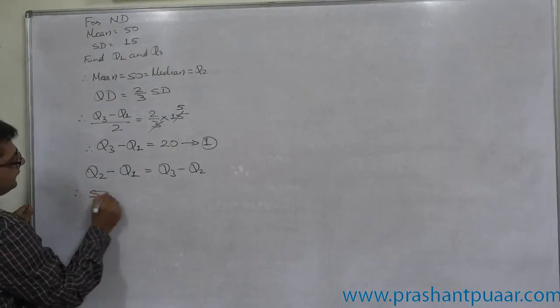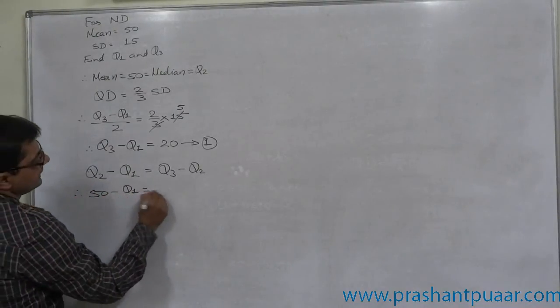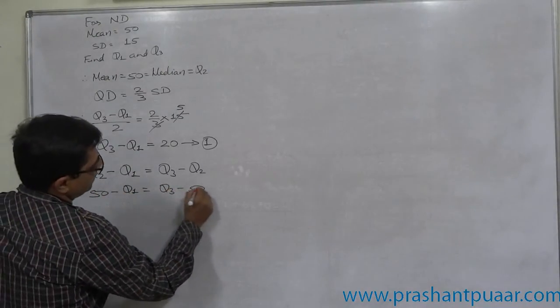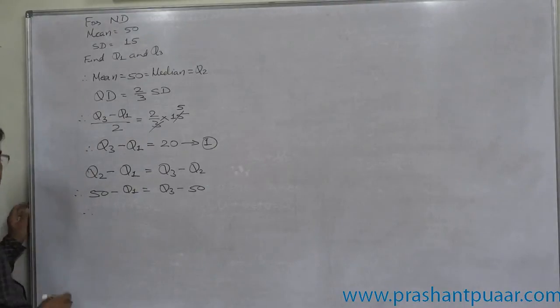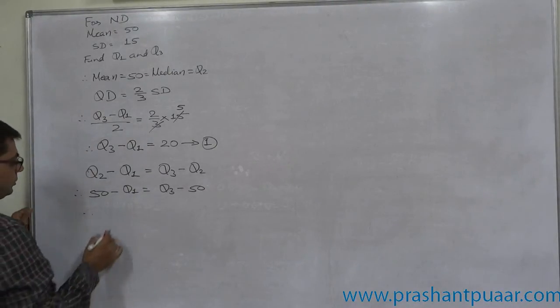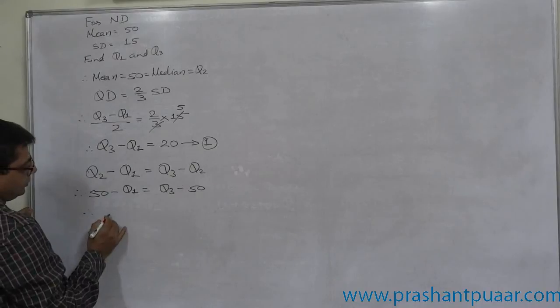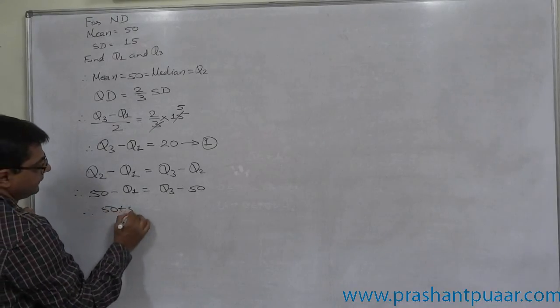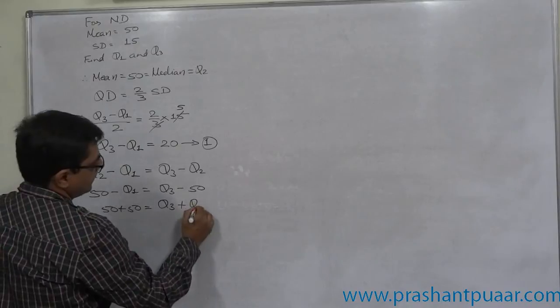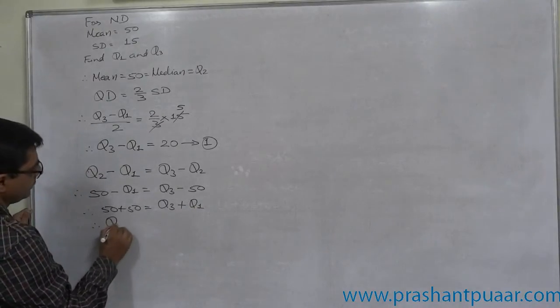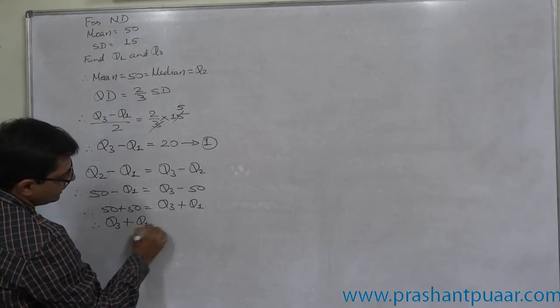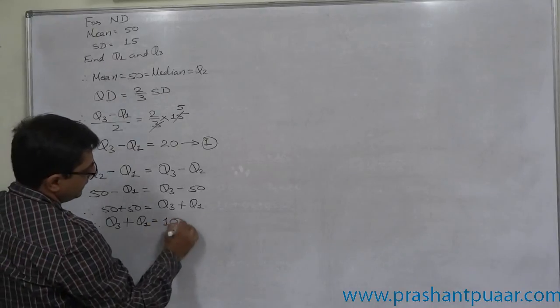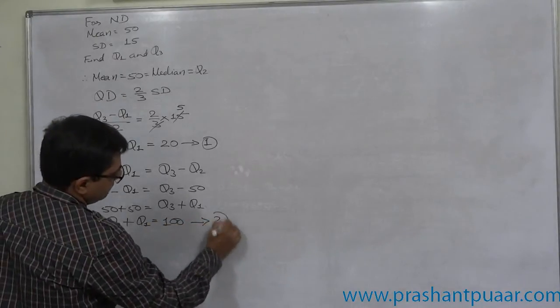That means, 50 minus Q1 equals to Q3 minus 50. So, 50 plus 50 equals to Q3 plus Q1. Therefore, Q3 plus Q1 equals to 100. This is our equation 2.